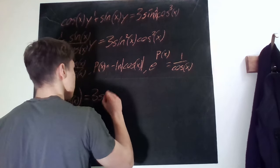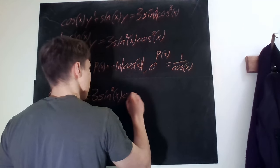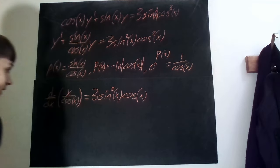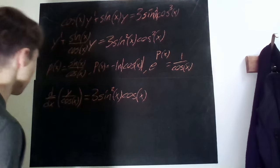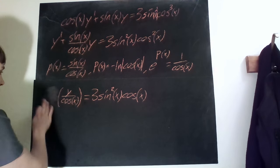three times sine squared x times cosine, just cosine of x this time. So now to solve this we take the integral on both sides.